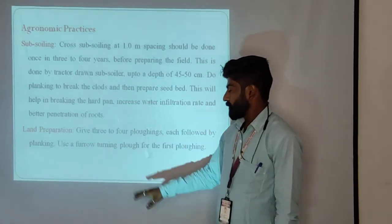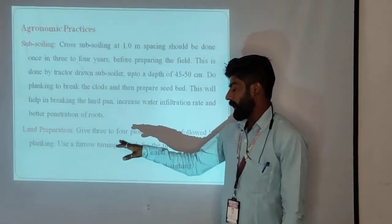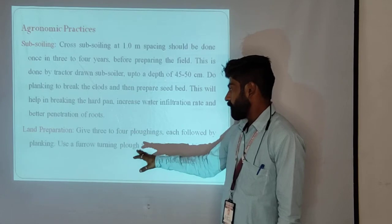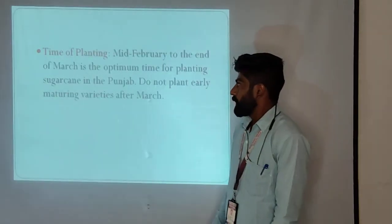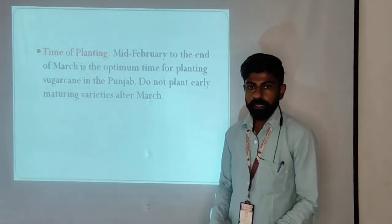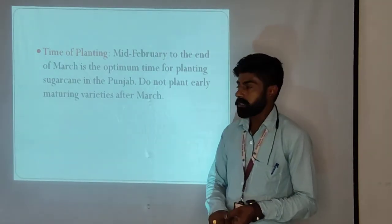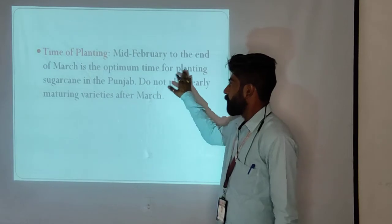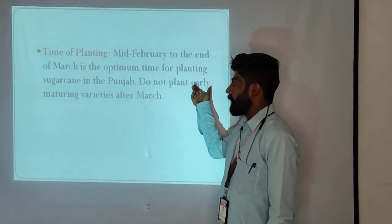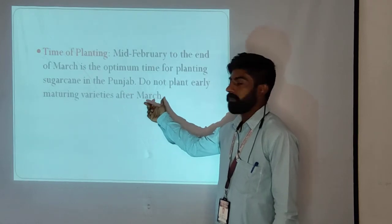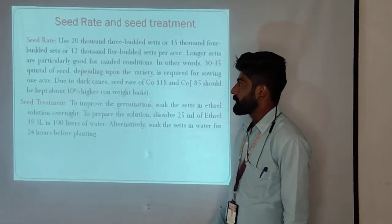For tillage, give 3 to 4 plowings, each followed by planking. Use a furrow-turning plow for the first plowing. Regarding time of planting, mid-February to the end of March is the optimal time for planting sugar cane in Punjab. Do not plant early maturing variety after March.